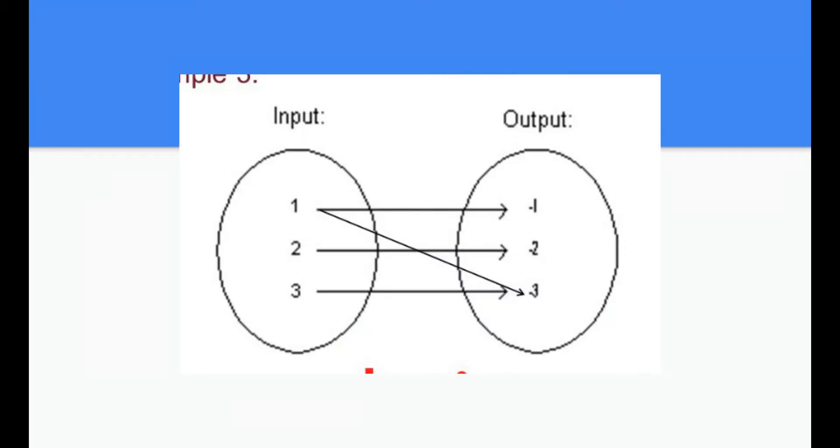When you look at this example though, you'll see that one has two arrows coming out from it, meaning that this one is paired with negative one and negative three. That's why this one's not a function, because you look at the input oval and see if any of these values have two arrows coming from it.